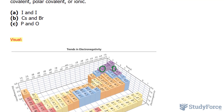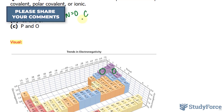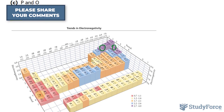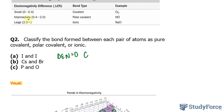Let's do the same thing for three more examples. Iodine and iodine — obviously two atoms with the same electronegativities, so we end up with a delta En of zero. Right away we know that this is covalent. Cesium and bromine: cesium is a metal; 2.8 minus 0.7 is 2.1, which is greater than two, therefore this is ionic.